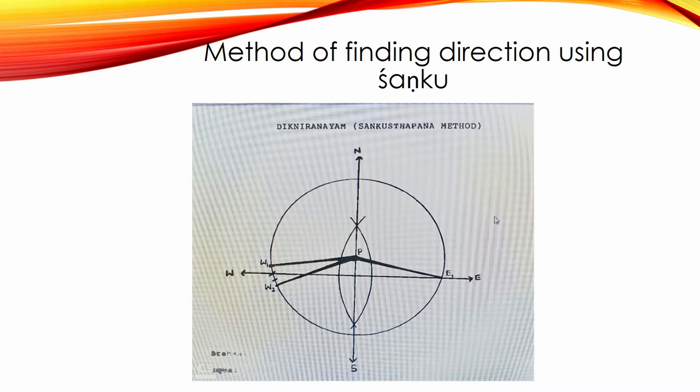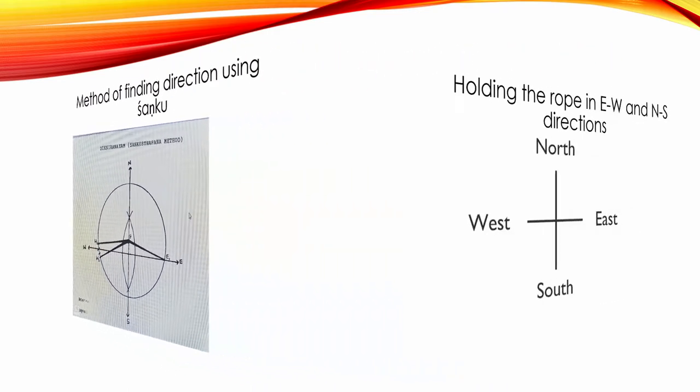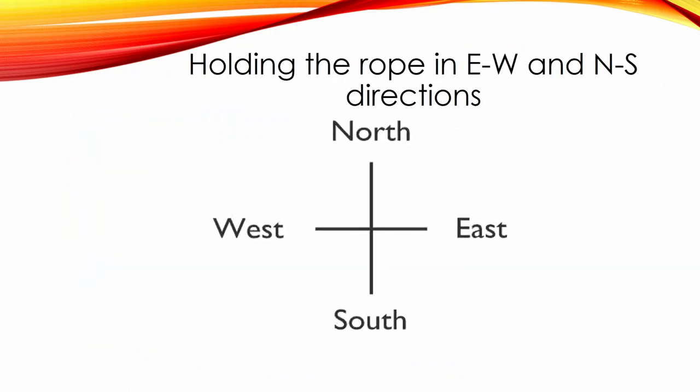After finding the four directions, the next step is to identify the appropriate plot for construction. The Malayalam verse says: hold a rope in the middle of the land, carefully one toward the east-west direction and the other to the north-south direction, and measure it. Hold four ropes at the four boundaries of the plot. When we make another rope here, we will get a square having four parts.